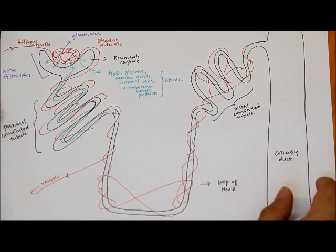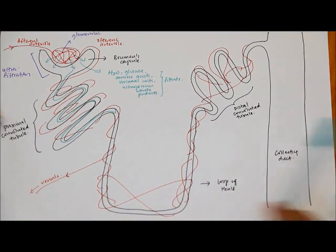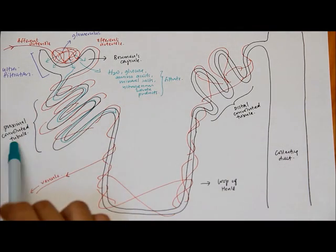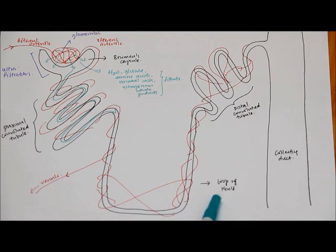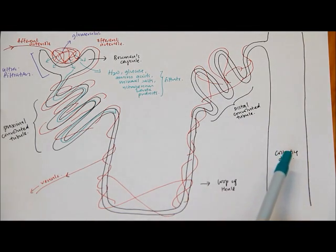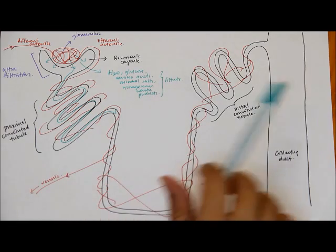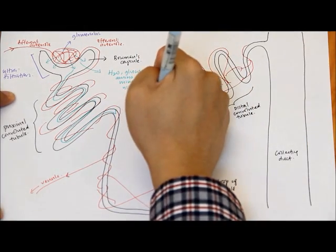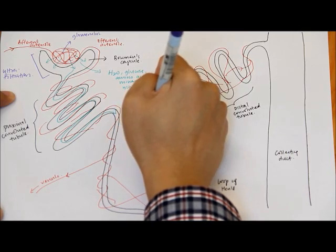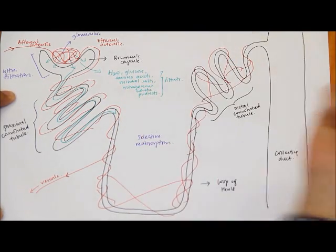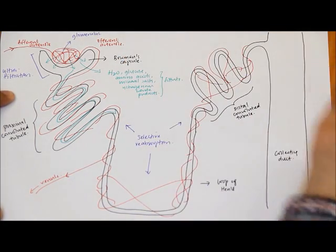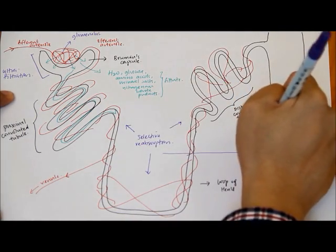The next process is selective reabsorption, which takes place at the rest of the nephron — the proximal convoluted tubule, the loop of Henle, the distal convoluted tubule, and the collecting duct.